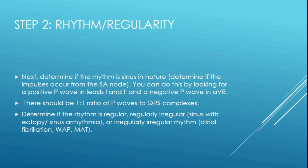Step two: determine if the rhythm is sinus in nature — if the impulses occur from the SA node. You can do this by looking for a positive P wave in leads 1 and 2 and a negative P wave in AVR. There should be a one-to-one ratio of P waves to QRS complexes. Then determine if the rhythm is regular, regularly irregular (such as sinus with ectopics — PVCs, PACs, PJCs — or sinus arrhythmia), or irregularly irregular (such as AFib, wandering atrial pacemaker, or multifocal atrial tachycardia — WAP and MAT).